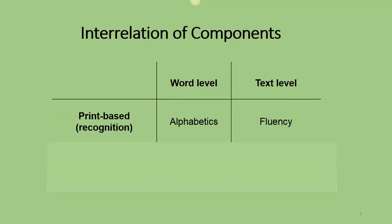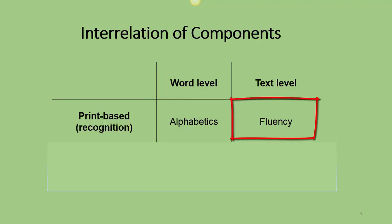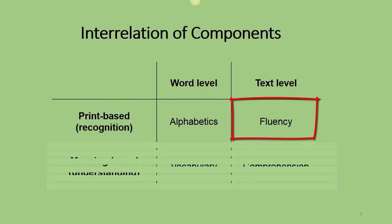The interrelation of the components is where we are now. In this graphic, we have print-based recognition. At the word level you have alphabetics, and at the text level there is fluency.